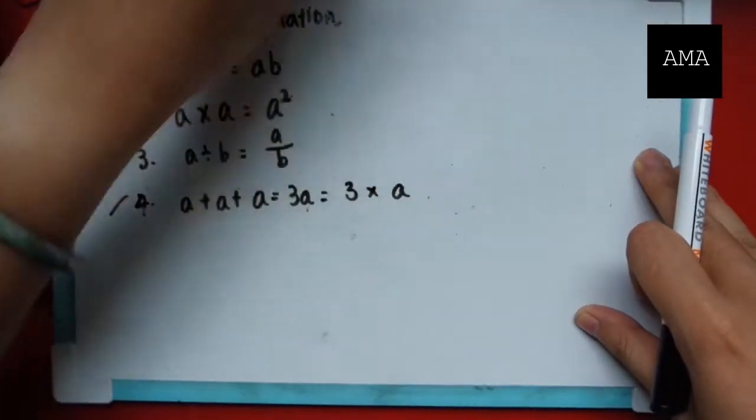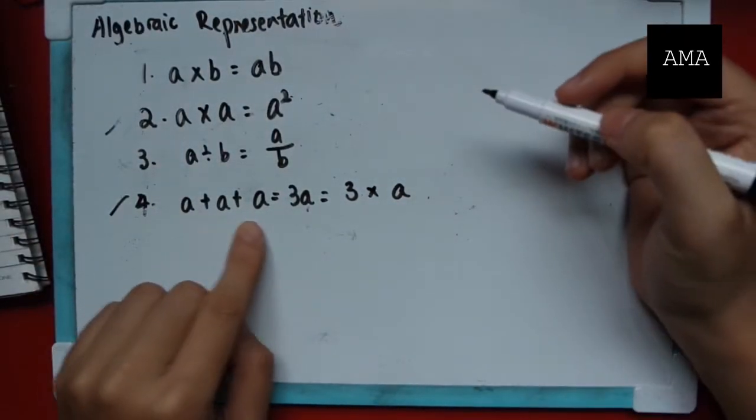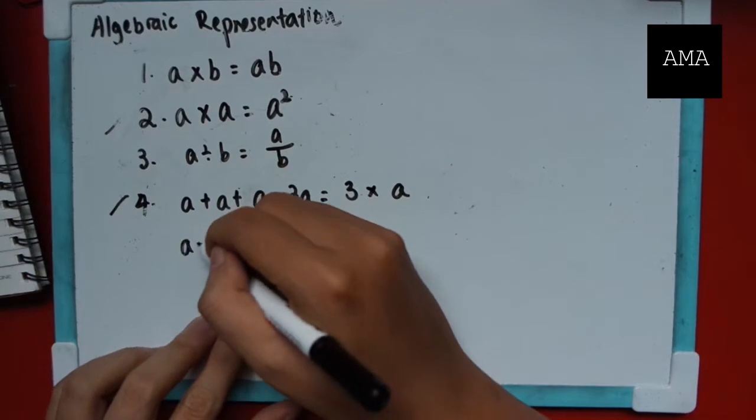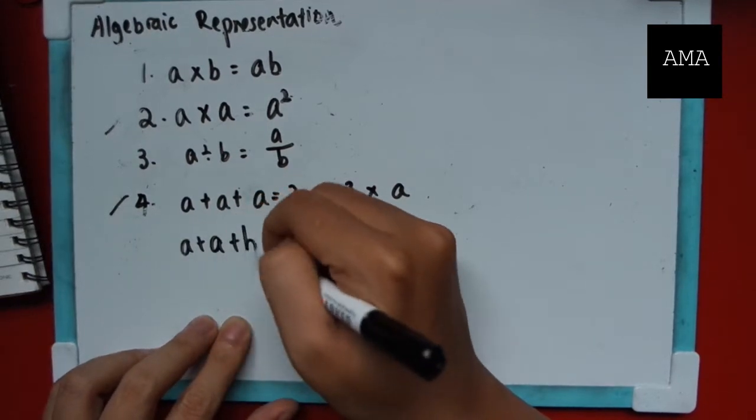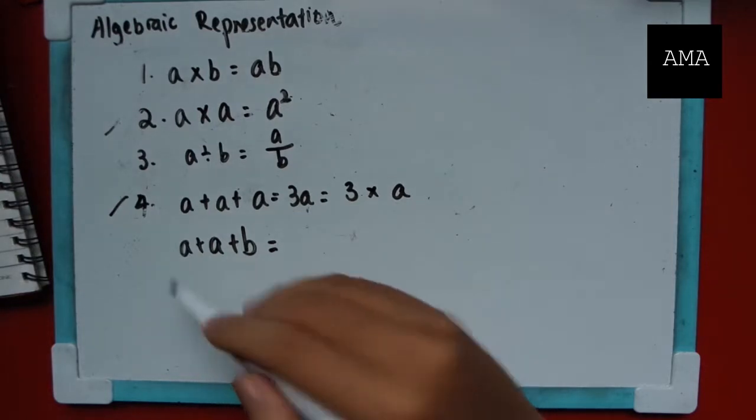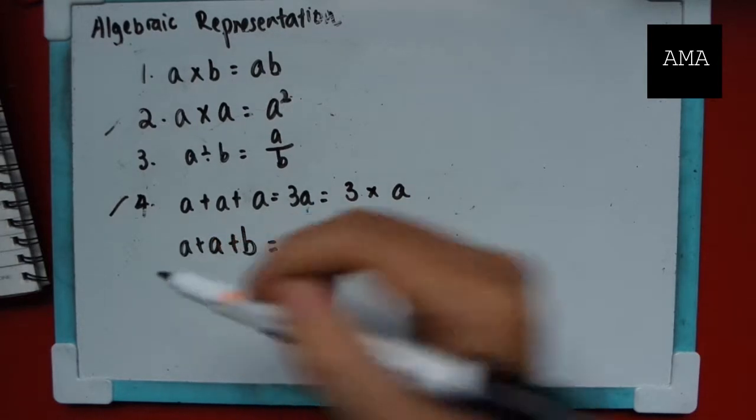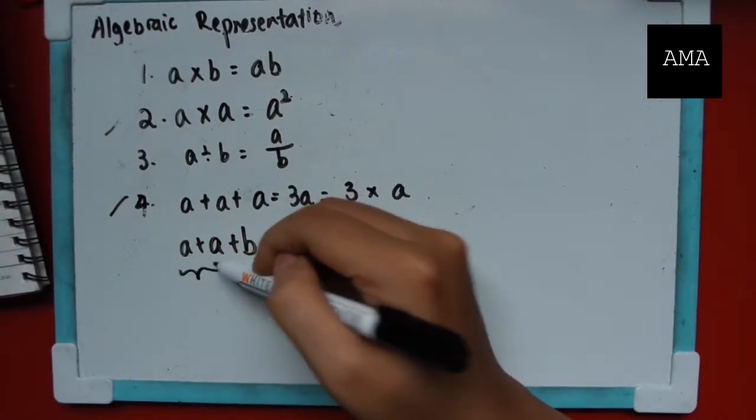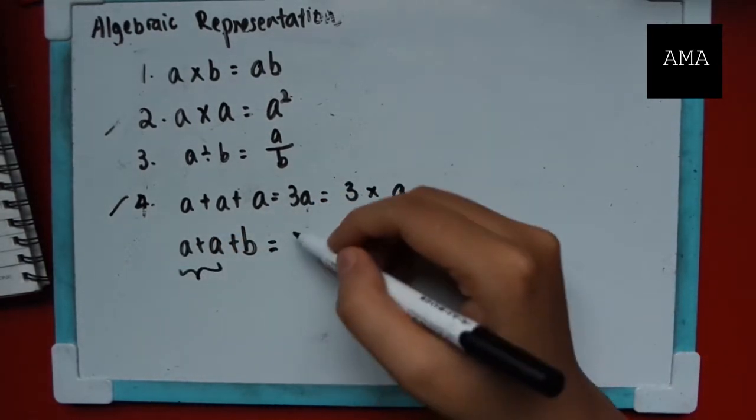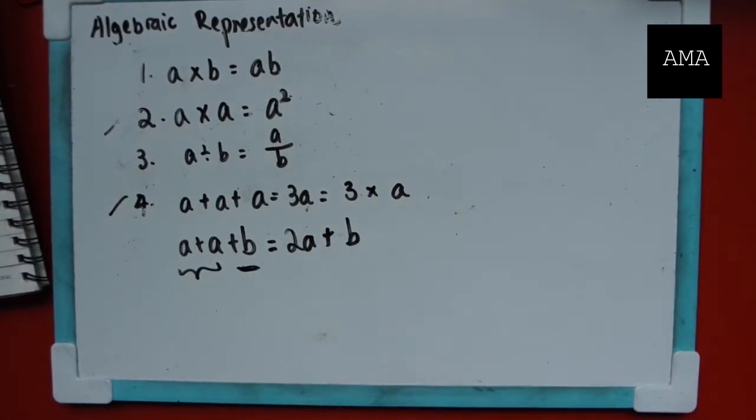Another thing I would like to talk about is point 4. If I have a plus a plus a is 3a, what if I change one of the variables? a plus a plus b. What can you do? Remember, it's similar to the previous problem. Similar variables, you can add them up. a plus a is 2a. If it's different, I'm sorry, there's nothing you can do. You just have to write it out like this. So this is the simplest form.